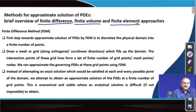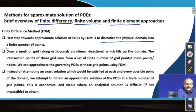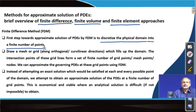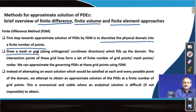In the finite difference method, we take a few steps to explain how the method actually works. We discretize the physical domain into a finite number of points to begin with, and then we apply a certain manner in which we approximate the derivatives of dependent variables at these points that we have defined. In order to generate the points, we draw a mesh or a grid. This mesh or grid covers the entire domain over which we are trying to obtain the approximate solution of the partial differential equation or system of partial differential equations.